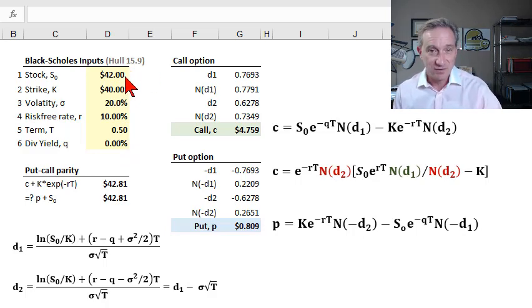That's Chapter 15 if you're following along. You'll see that they return the call and put prices that match his in the text. So that's the point of the model, to take these input assumptions for the option and return a price for the European call and the European put.